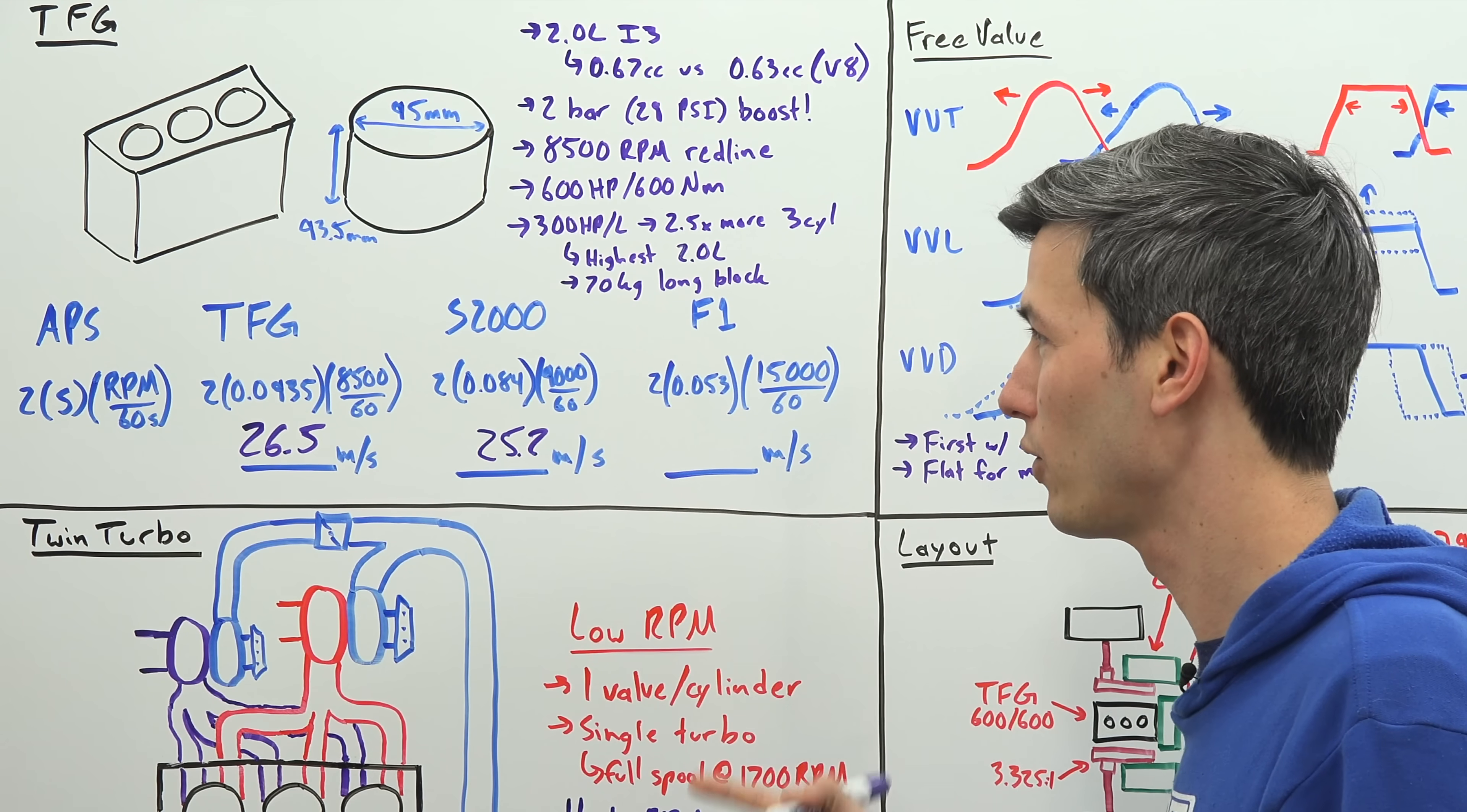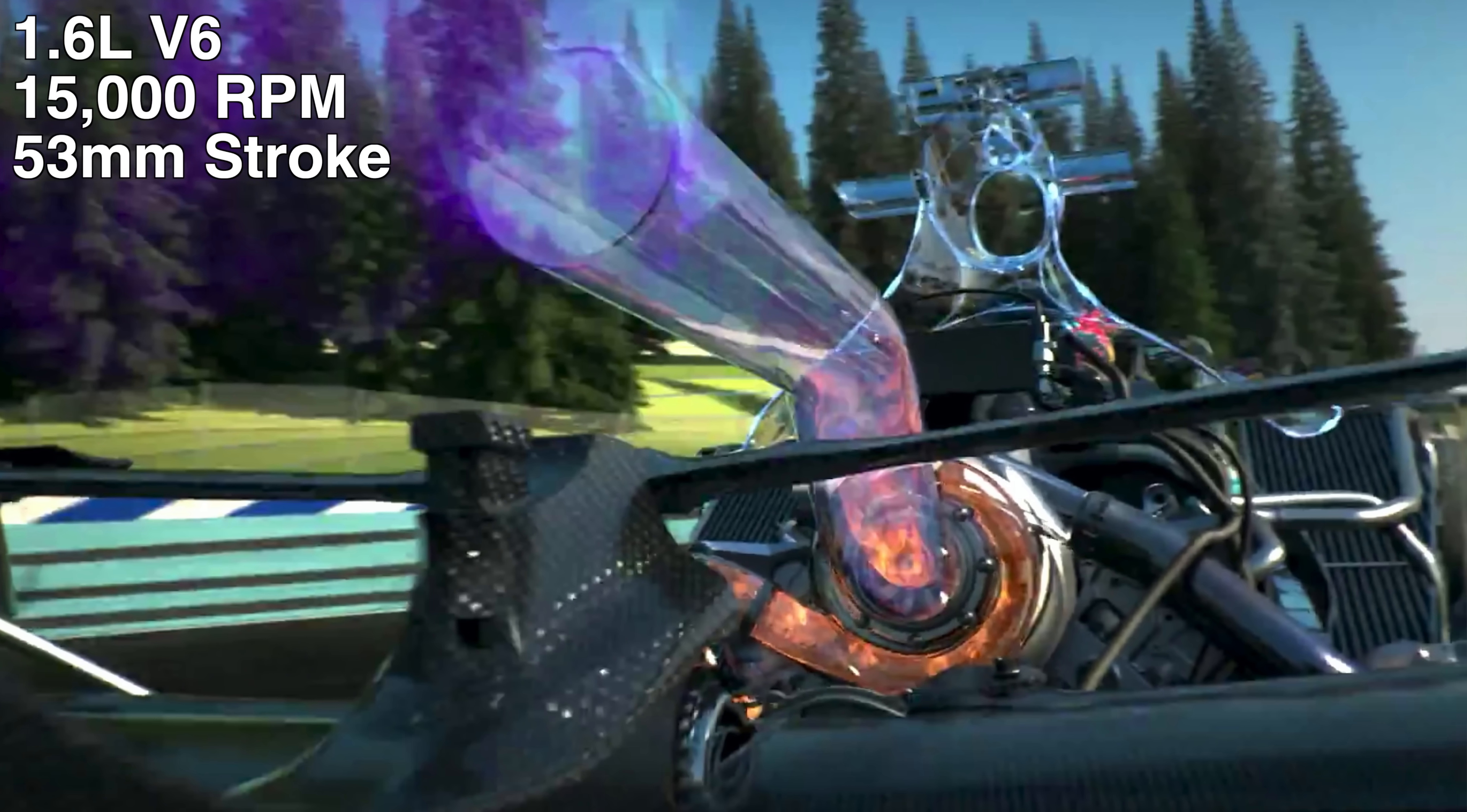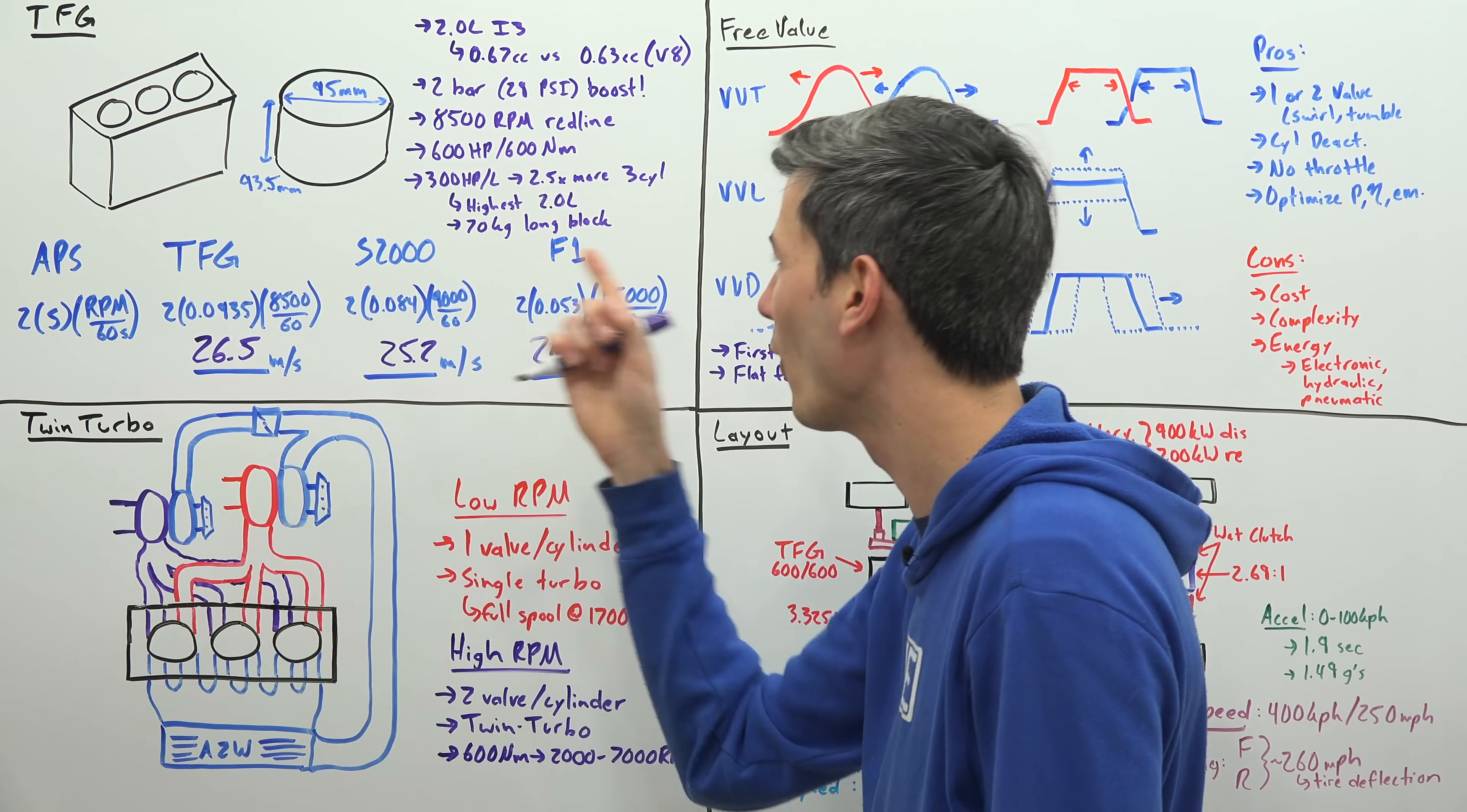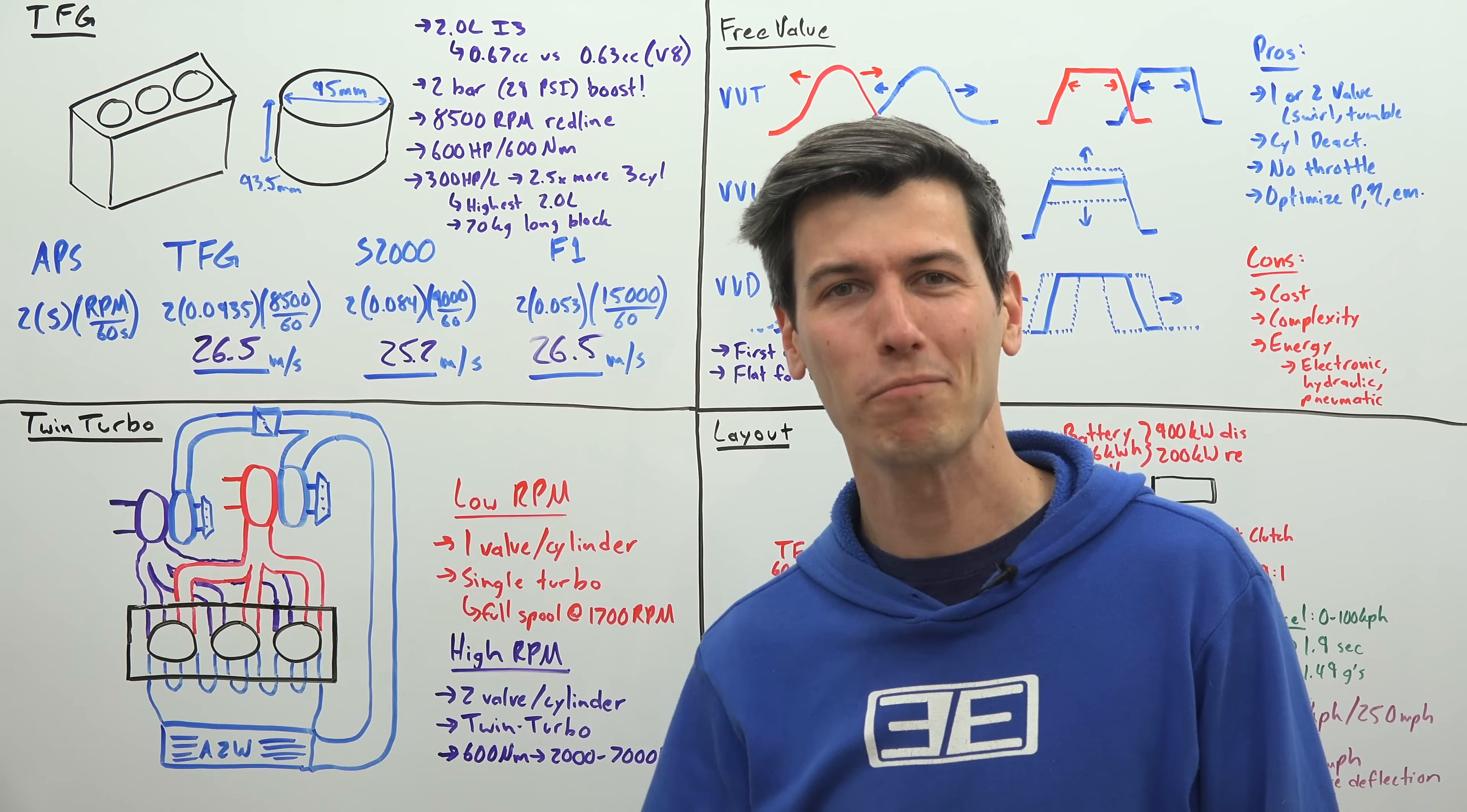And versus an F1 engine. If you look at today's F1 engines, they're 1.6 liter V6s. They rev up to 15,000 rpm with a stroke of 53 millimeters. Multiply this out and we get an average piston speed of 26.5 meters per second. So this thing has pistons that move as fast as F1 engines. It's got cylinders that are larger than Koenigsegg's V8 cylinders, and it has 29 psi boost.